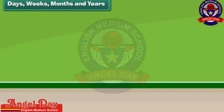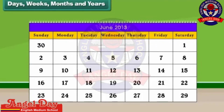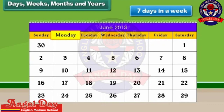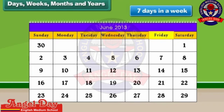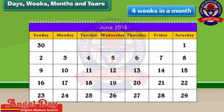Time can also be measured in days, weeks, months and years. There are 7 days in a week. They are Sunday, Monday, Tuesday, Wednesday, Thursday, Friday and Saturday. There are 4 weeks in a month.